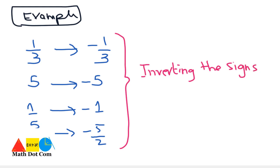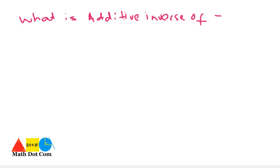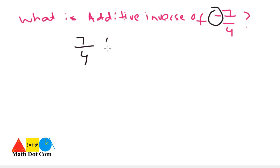The number stays the same — only the sign is inverted. So if asked what is the additive inverse of minus seven by four, you can quickly answer: it is seven by four. You are just inverting the sign to get the additive inverse.